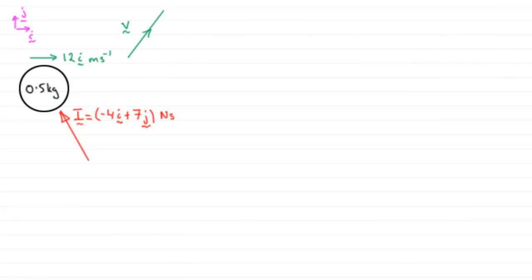To do this we've got to be familiar with the fact that impulse equals change in momentum. I'll just write that down for you. Impulse I, and it's a vector quantity so I'll just put a squiggle underneath it, is equal to change in momentum. In other words MV minus MU. Both final velocity and initial velocity are vector quantities.